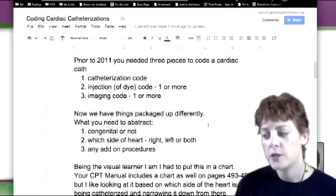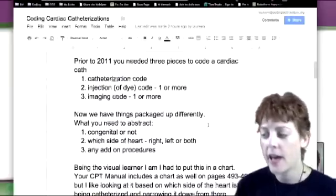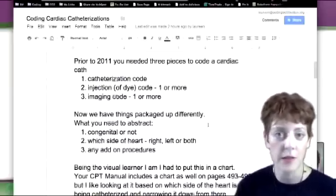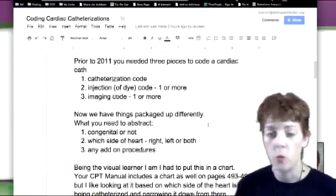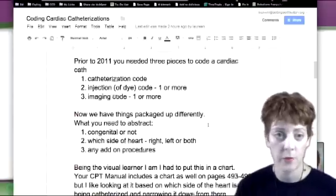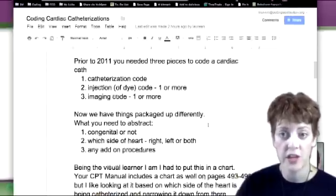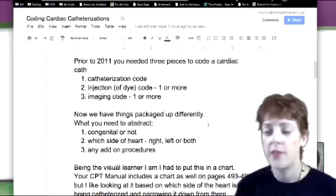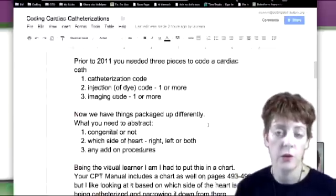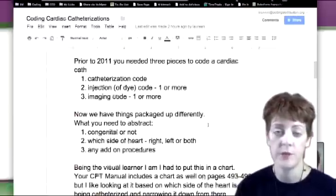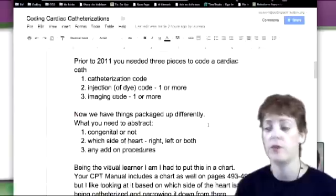So prior to 2011, when you coded a cardiac cath, you actually needed three codes at a minimum. You needed one catheterization code to say if it went on the right or the left. You needed one or more injection codes because wherever you inject a dye would get a code. And then one or more imaging codes, where did you take images? Was it of the chambers of the heart? Was it of coronary vessels?